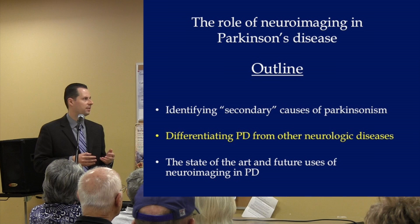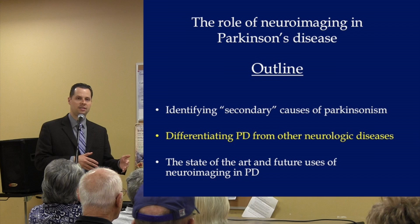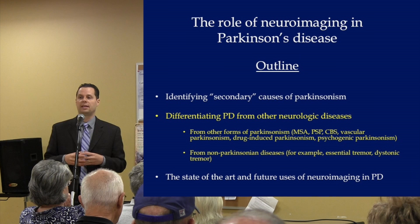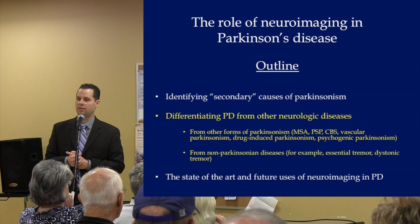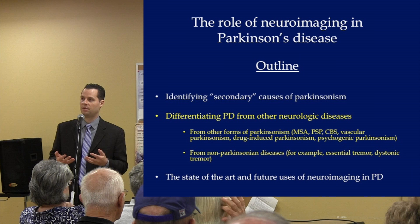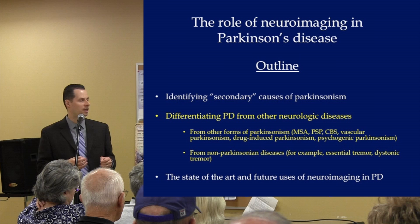The second thing is differentiating Parkinson's disease from other neurologic diseases, broken up into other forms of Parkinsonism — atypical forms like progressive supranuclear palsy, corticobasal ganglionic degeneration, and multiple system atrophy. These are Parkinson Plus syndromes that can cause Parkinsonism, are neurodegenerative diseases, and don't respond to medications the same way. So what's the role of neuroimaging in separating those from Parkinson's disease?